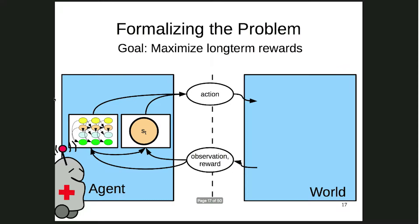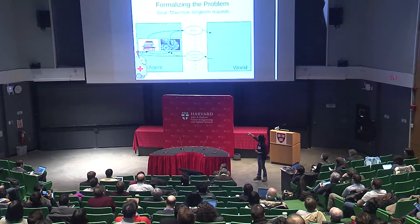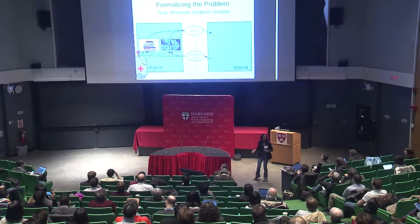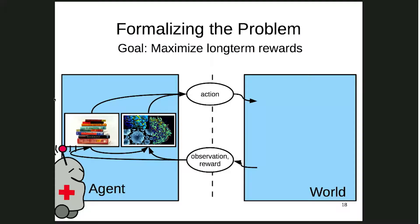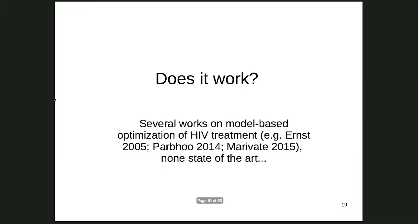Once we set up this model, we can work on solving it. We have our model of how the world works, we know where we are because we have our post-it note, the world sends us observations and reward signals, and we choose an action. Grounded back into HIV, this looks like: I've learned about HIV in school, I've seen some patients, and here's what I know about this specific patient — I combine disease knowledge and patient-specific knowledge to choose my action.